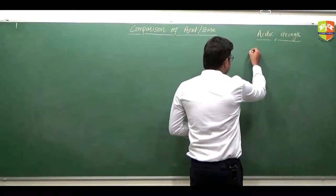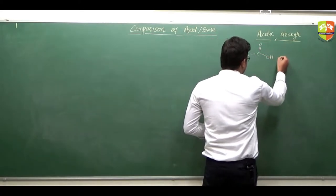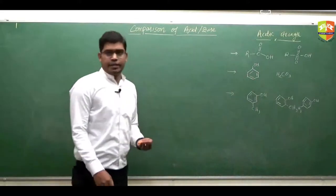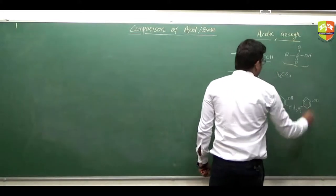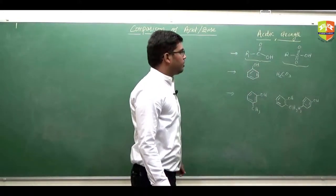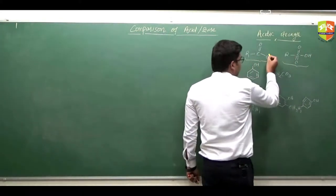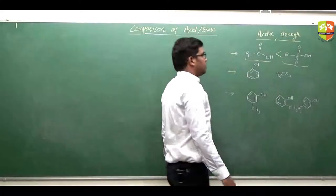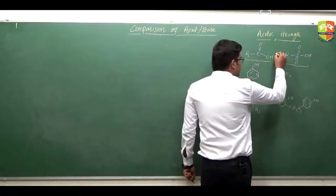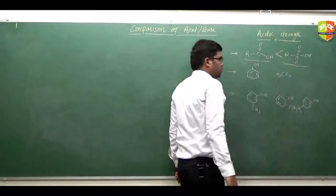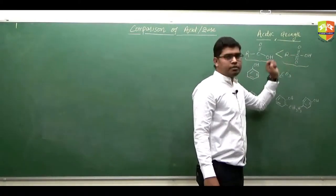For example, if we compare these three examples — this is carboxylic acid and this is sulfonic acid. In this sulfonic acid, if you form the conjugate base, we will get a negative sign here and a negative sign here. We have equal resonance, but we have more number of resonating structures here, hence it is more stable.